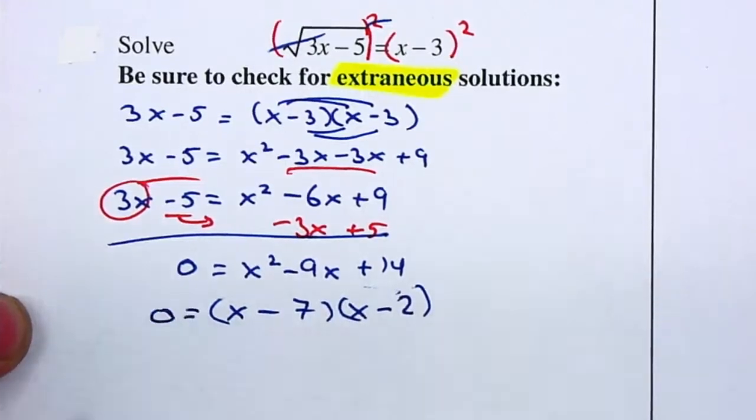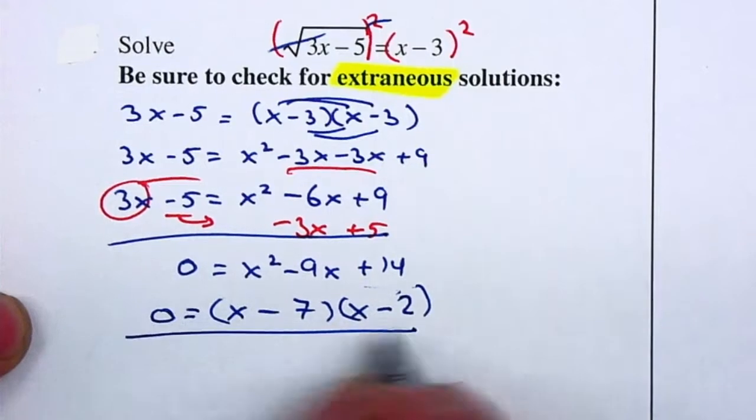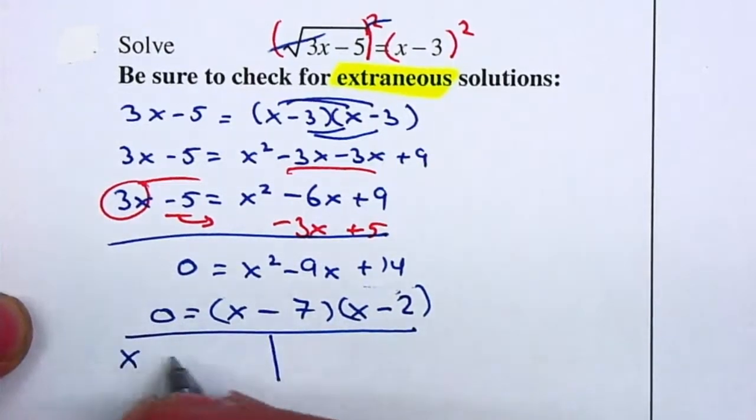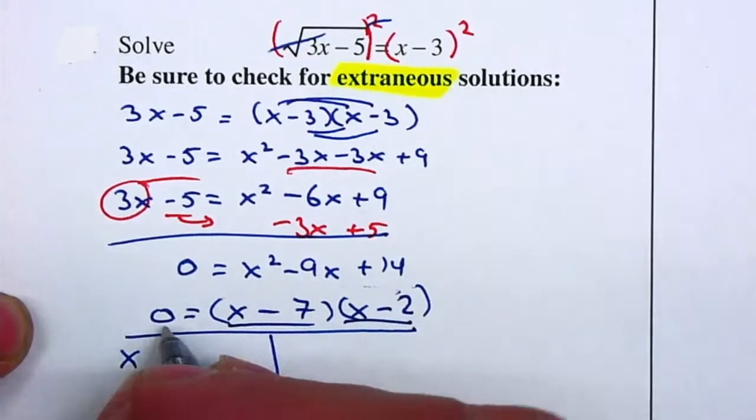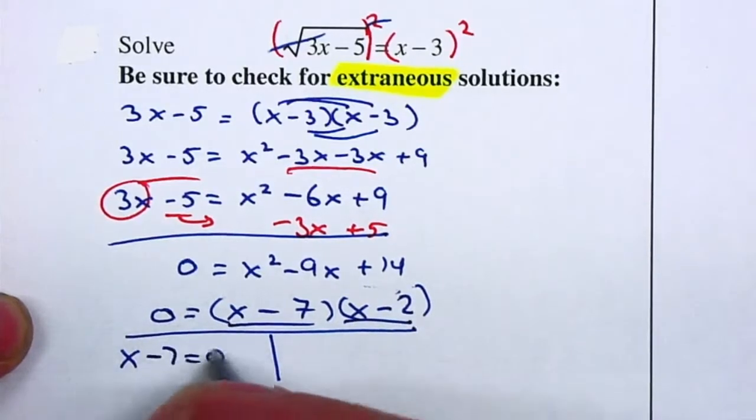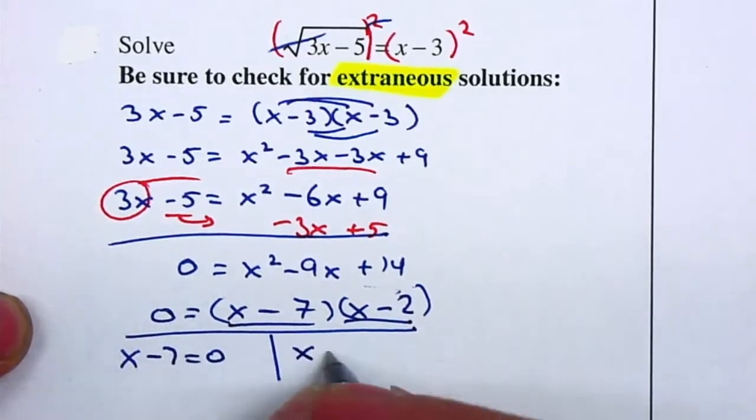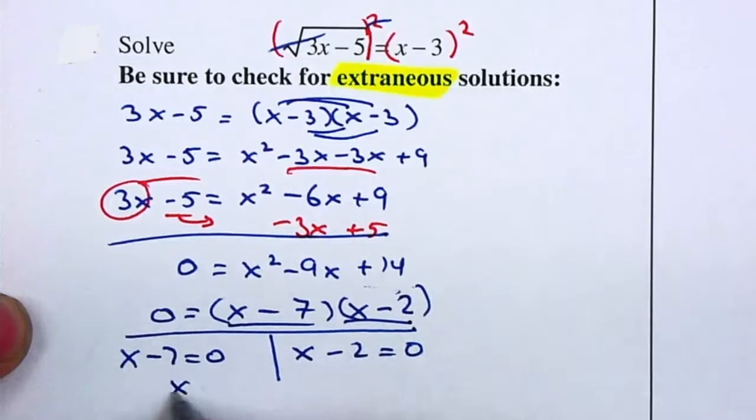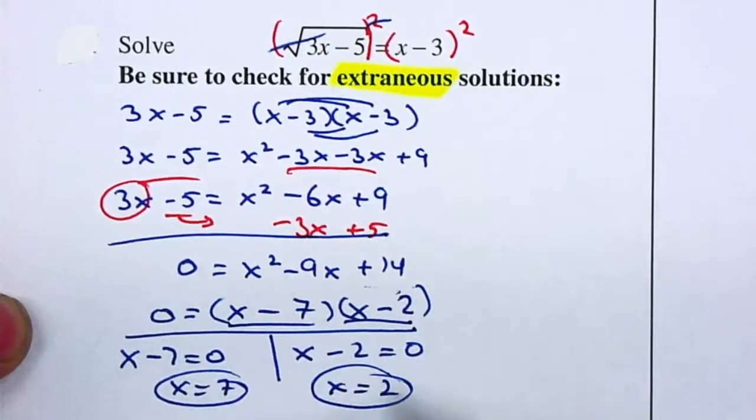Since it's equal to 0, I can use my zero product property, which tells me that at least one of them should be equal to 0. Since they're multiplying and they're equal to 0, x minus 7 should be equal to 0 and x minus 2 should be equal to 0. Move the 7 to the right, x is equal to 7. Move the 2 to the right, x is equal to 2.